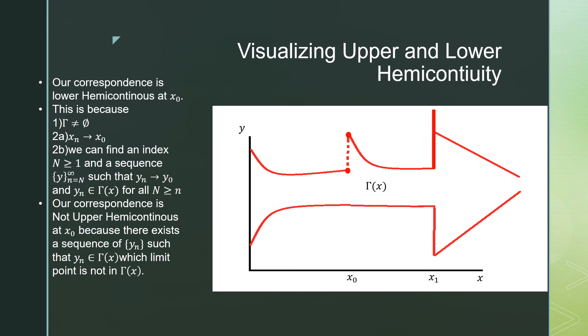And our second point is that we can identify an index n̄ being greater than one such that we can start this sequence y_n from a certain n̄ such that y_n asymptotically approaches the y_0 and y_n is contained in our correspondence for all capital N greater than our little n̄. Our correspondence however is not upper hemicontinuous at x_0.